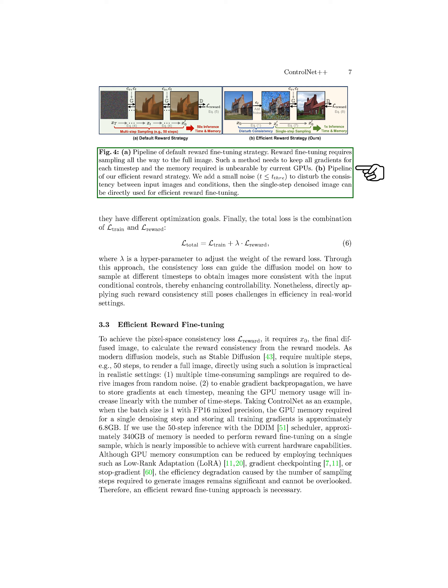We introduce an efficient method for fine-tuning rewards. To achieve pixel-space consistency loss, we need the final diffused image X-0 to calculate reward consistency from reward models. However, using modern models like stable diffusion, which require multiple steps to render a full image, is impractical due to time-consuming samplings and increased GPU memory usage.